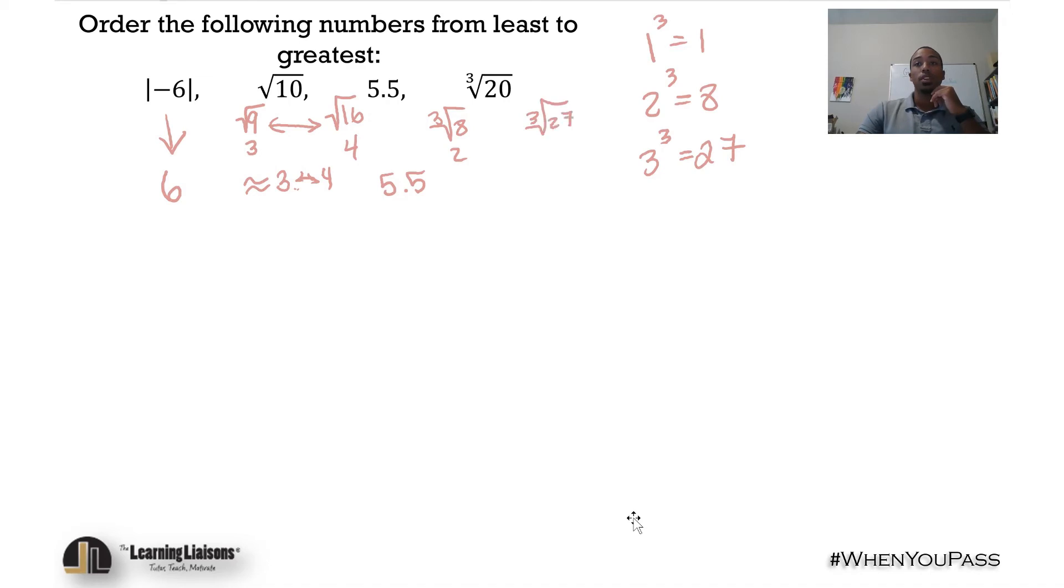If we're ordering this from least to greatest, that's how we can tackle this type of problem. First analyze each number and then order them. We got 6, something between 3 and 4, 5.5, and something between 2 and 3.